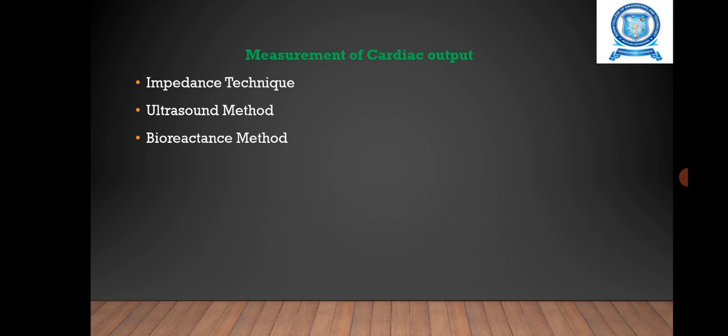The next one is ultrasound method. It is used to measure the velocity of blood flow in the ascending aorta by the application of Doppler principle.